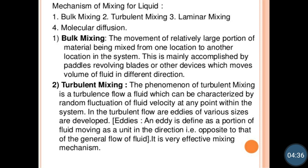The next mechanism is turbulent mixing. The phenomenon of turbulent mixing involves turbulent flow, where a fluid is characterized by random fluctuation of fluid velocity at any point within the system. Turbulence means uneven directions of liquid flow. Generally, turbulent mixing is very effective mixing. Turbulence can be produced with the help of paddles, different types of blades, or with air. Because of the uneven flow in different directions, the fluids get mixed with each other.